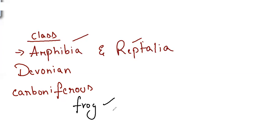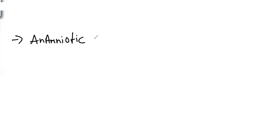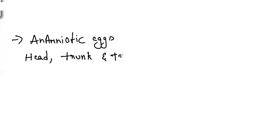This water dependency for reproduction is similar to what we see in bryophyta and pteridophyta. The eggs do not have any protective covering, which is why they are laid in water — we call them anamniotic eggs. The body is divided mainly into head, trunk, and tail, though some amphibians do not have a tail.